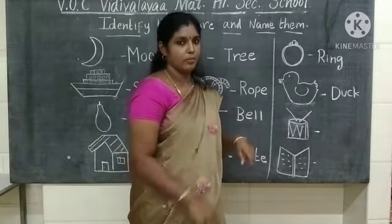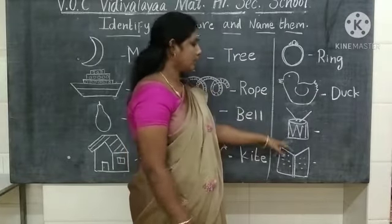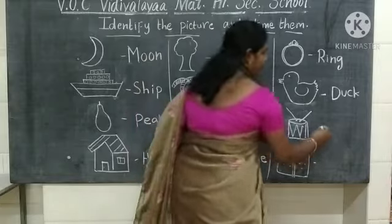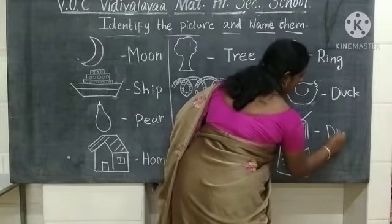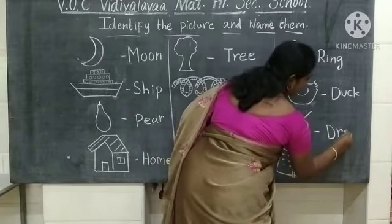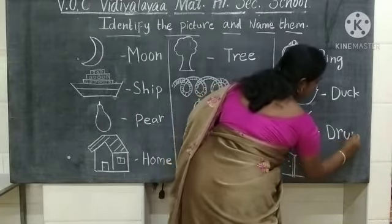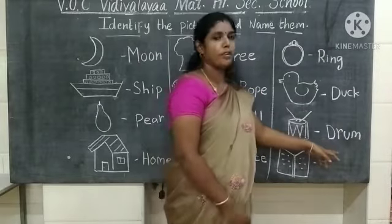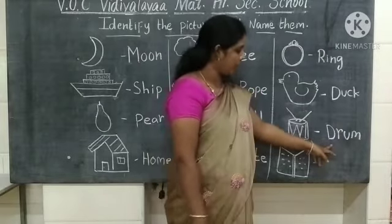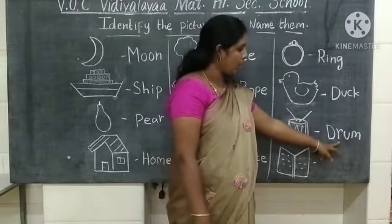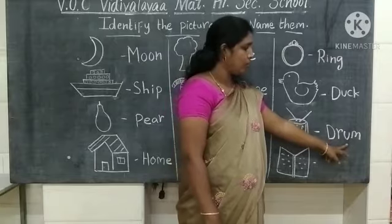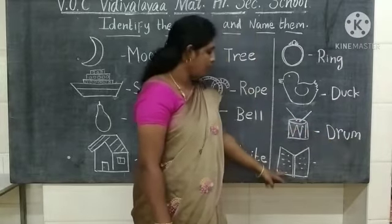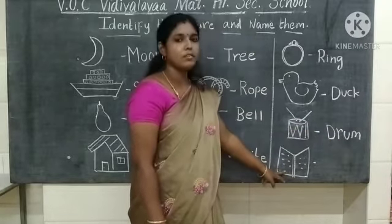What picture is this? This is a drum. What is the spelling of drum? D-R-U-M — drum. What is the spelling of drum? D-R-U-M — drum.